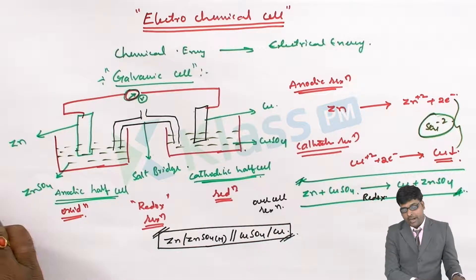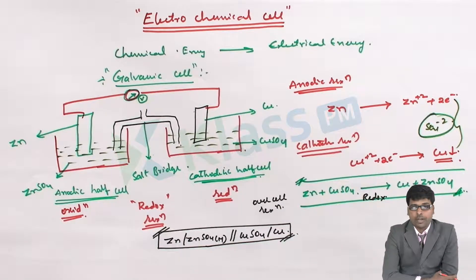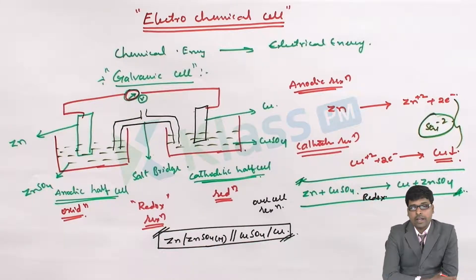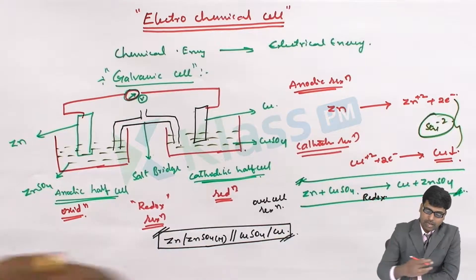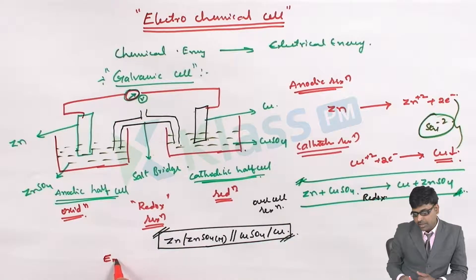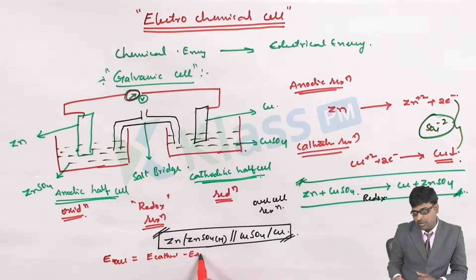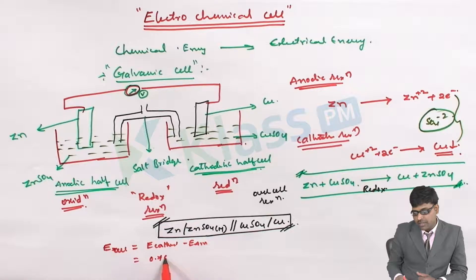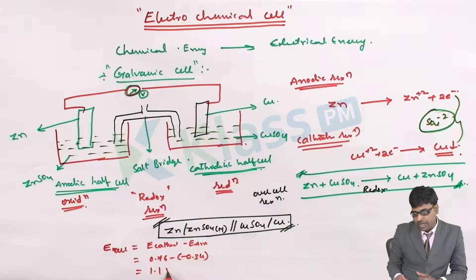When we connect a standard zinc electrode to a standard copper electrode — where the standard zinc electrode means pure zinc dipped in a 1 molar ZnSO₄ solution, and the copper rod is dipped in a 1 molar CuSO₄ solution — the EMF of the cell equals E(cathode) minus E(anode), which is 0.34 minus (−0.76), giving 1.1 volts.